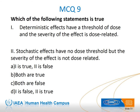Regarding the effects and side effects, which of the following statements is true? Statement 1: deterministic effects have a threshold of dose and the severity of the effect is dose-related. Statement 2: stochastic effects have no dose-threshold but the severity of the effect is not dose-related. The right answer is A: statement 1 is true, statement 2 is false. In the upcoming slides, this will be clarified.